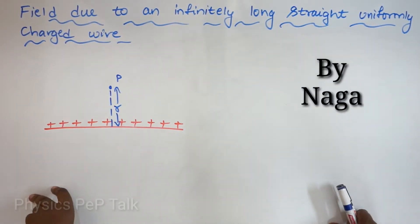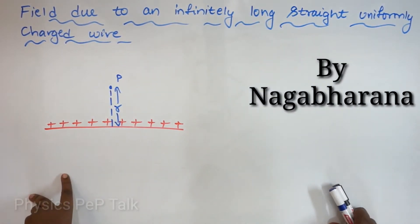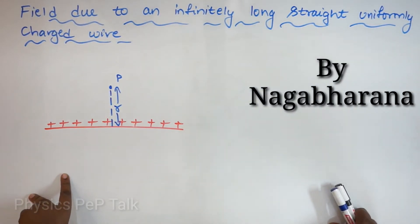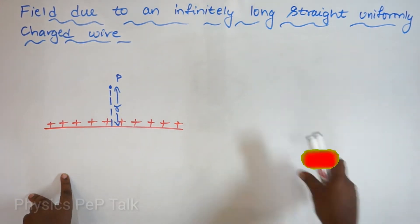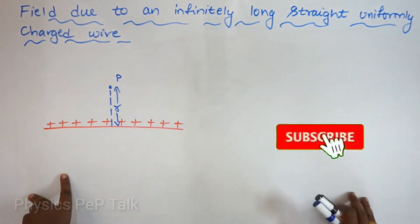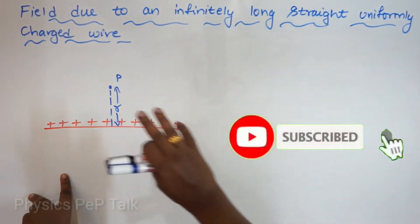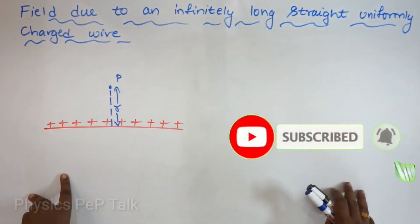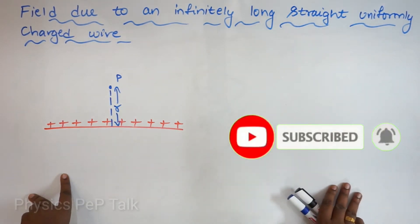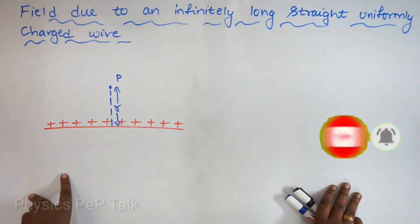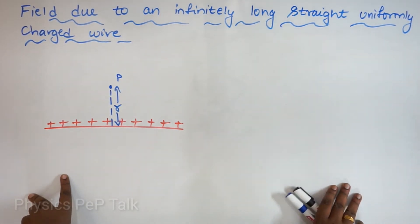Hello students, welcome to Physics Pep Talk. This video is about the application of Gauss law. The first application is the electric field due to an infinitely long straight uniformly charged wire.